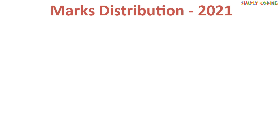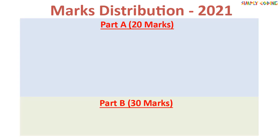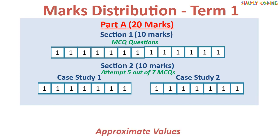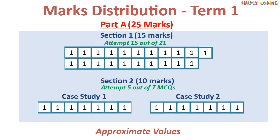Last year, CBSE had moved to a new paper format where the paper was divided into two parts. Part A had MCQ and case study-based questions, and Part B had short and long answer questions. For the Term 1 exam, the whole of Part B will be removed and Part A will be for 25 marks. Section 1 will have 21 MCQ questions where you have to attempt 15. Then there will be two case study questions — one for Cyber Ethics and one for HTML — where a small paragraph or HTML code might be given and you will be asked MCQ questions around it. Most questions will be logical reasoning where a situation is given and you have to choose the correct option.